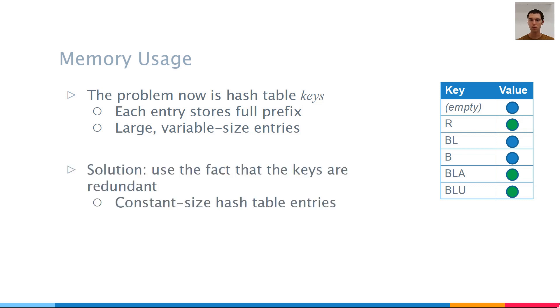In the cuckoo trie, we solved this problem by using the fact that the keys are redundant. Each key is just another key plus one symbol. For example, the key BLA is just the key BL plus an A. This happens because the keys are names of nodes in the trie, and each node has a parent, so BLA is just the name of its parent, BL, plus one symbol. We designed a hash table that uses this redundancy to only store that last symbol in each hash entry. This makes the hash entries small, and keeps their size fixed even when the trie contains long strings.